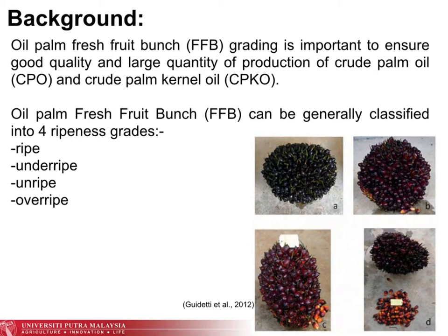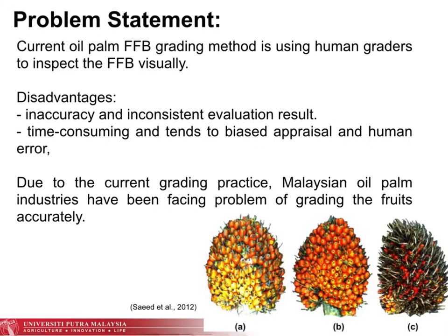Picture A is an unripe FFB, B underripe, C ripe, and D overripe. The problem statement of this study is related to the current oil palm FFB grading method, which uses human graders to inspect the FFB visually. The disadvantages of this method include inaccuracy and inconsistent evaluation results, time-consuming processes, bias, and human error.